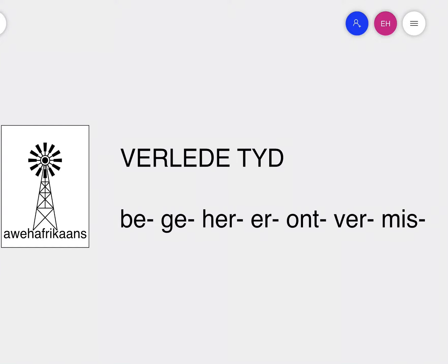Hello, we're looking at verledete tyd rules, and this is the rule for verbs that start with the following prefixes: be, ge, her, er, ont, ver, mis.